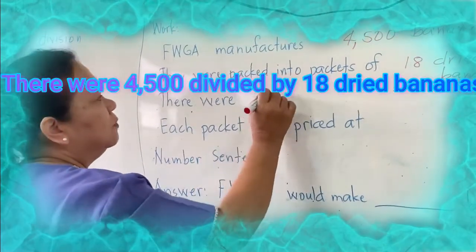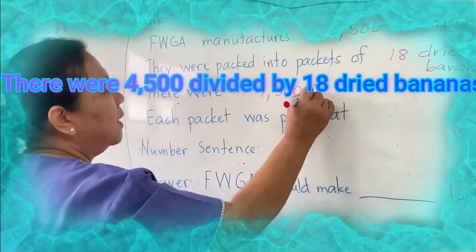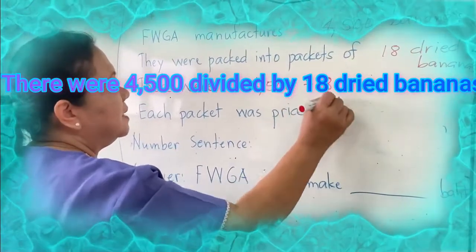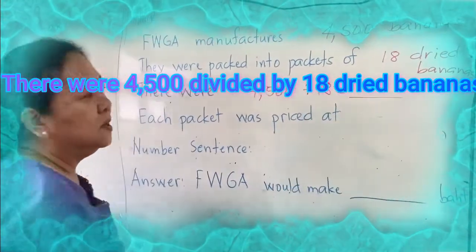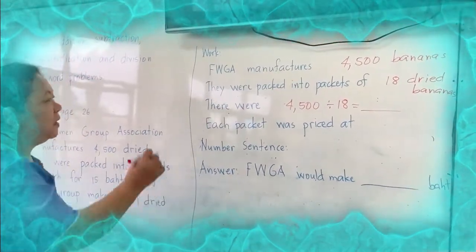And then there were 4,500 divided by 18. You don't know yet. So to know that, you need to get extra paper and divide.